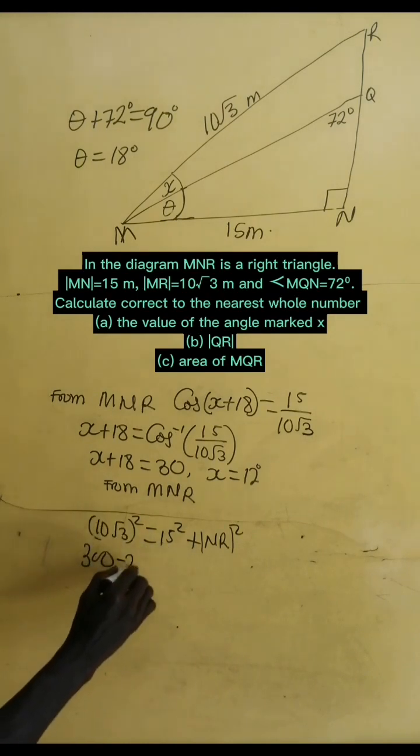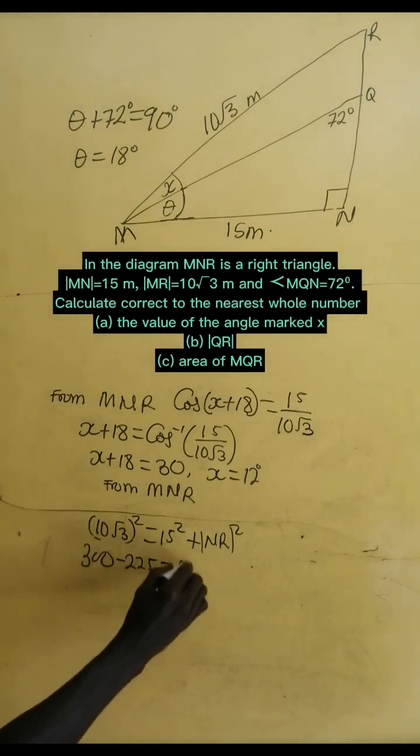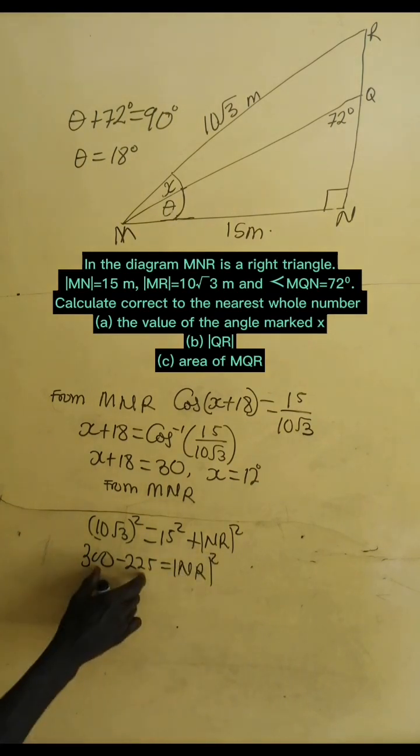So, this one will give us 300. This is 225. And then we subtract it from 300. It gives us NR squared. This gives 75, which equals NR squared.